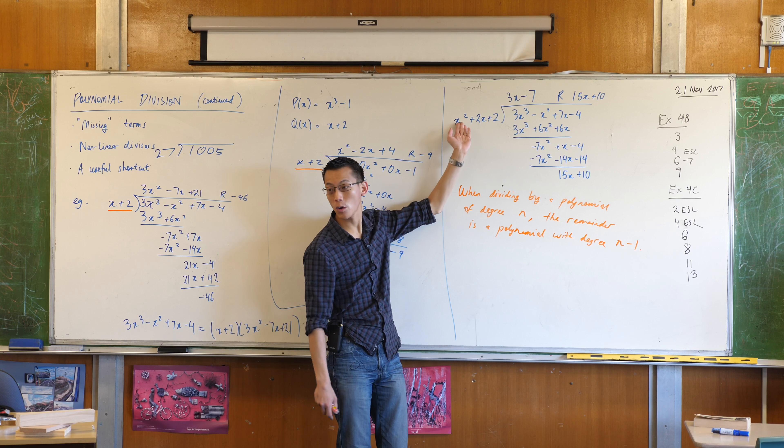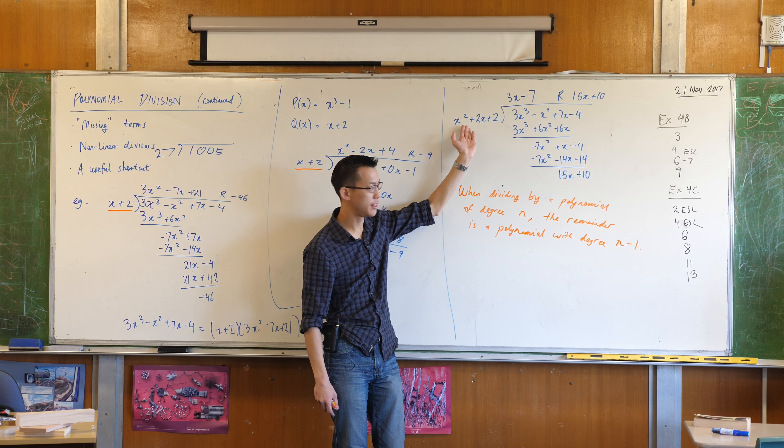Well, to be precise, it's a maximum of n − 1 — that's the biggest it can get. Just like when you divide 1,005 by 27, the remainder will be less than 27. So when we talk about remainders in polynomials: if you divide by a quadratic, the remainder is at most linear. If you divide by a cubic — and I hope you never have to — then the remainder will have a maximum degree of 2. Always one less.